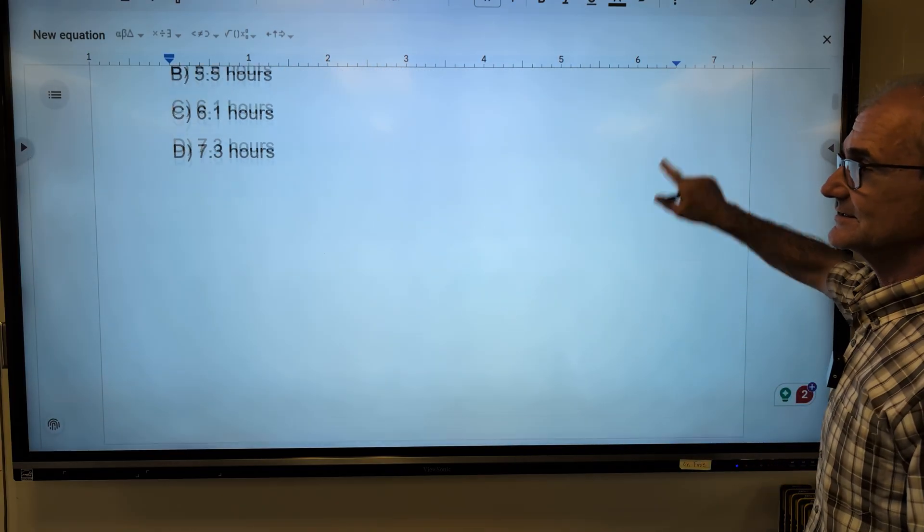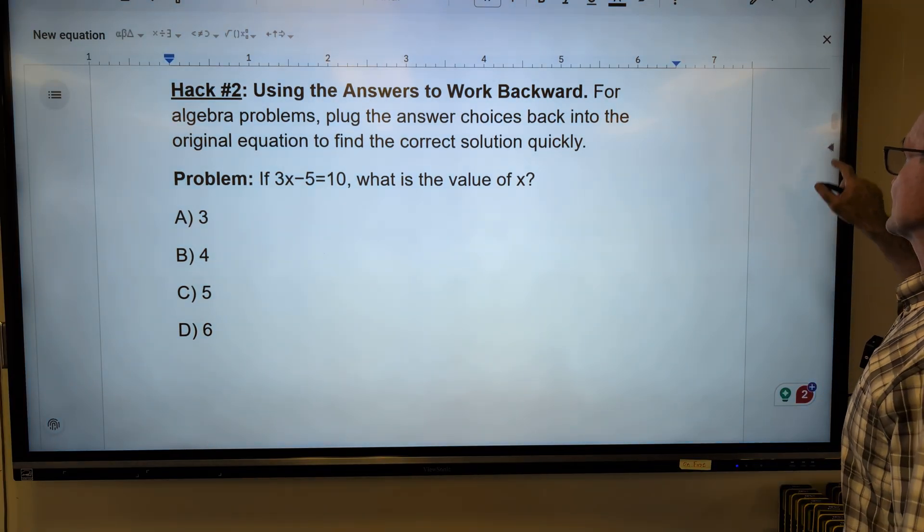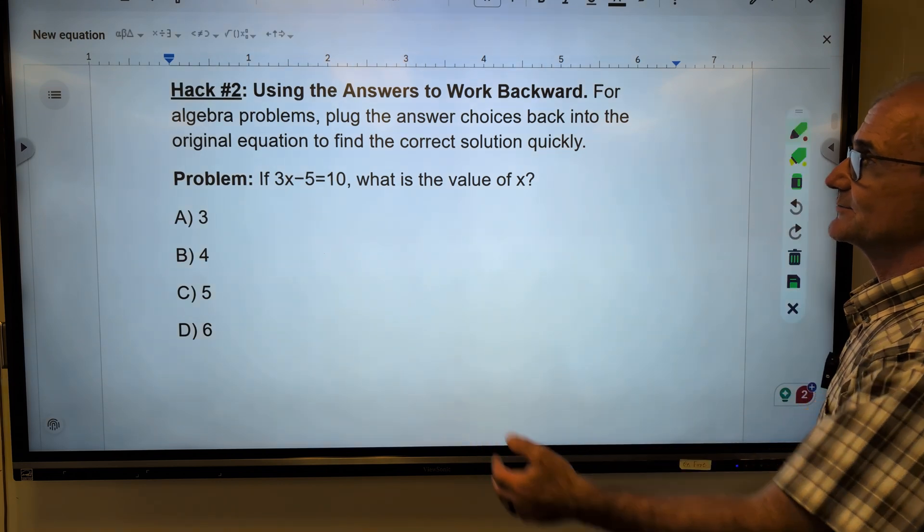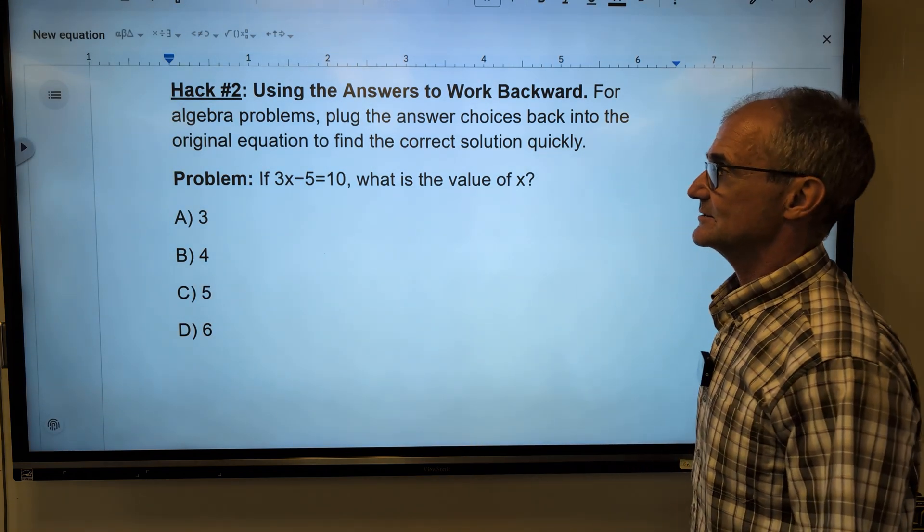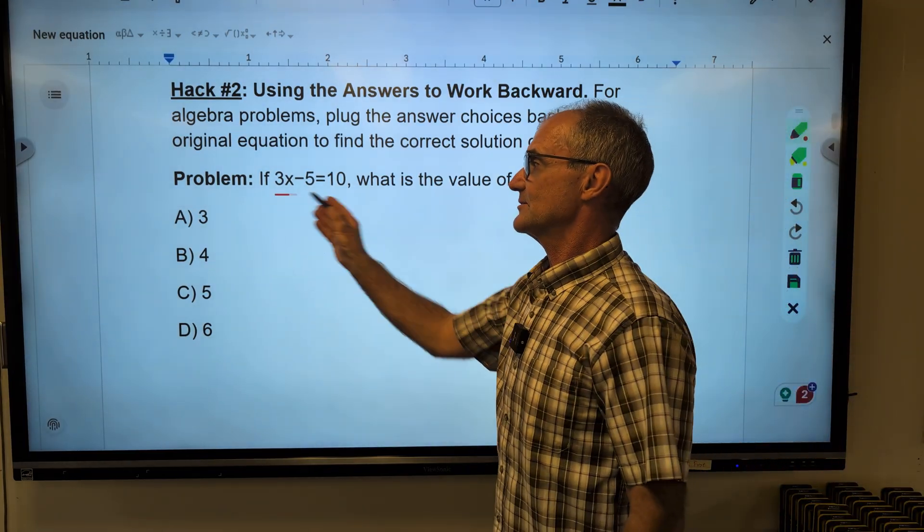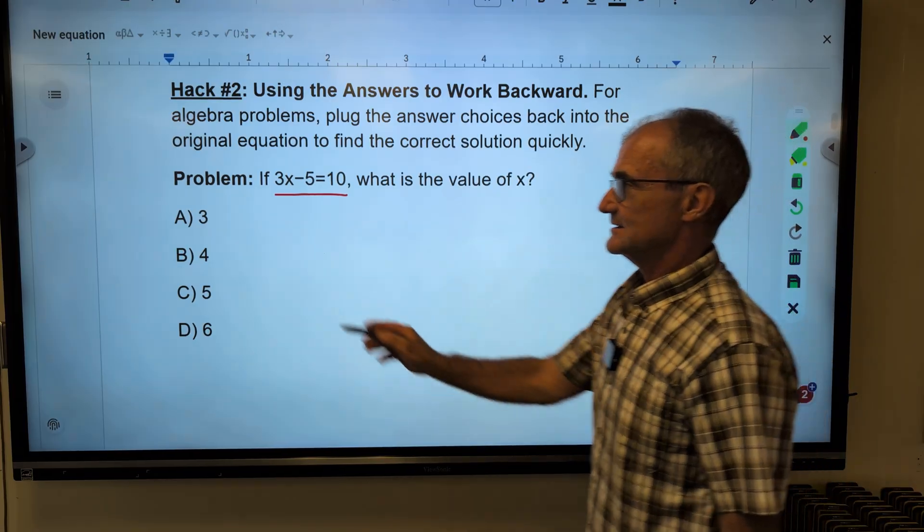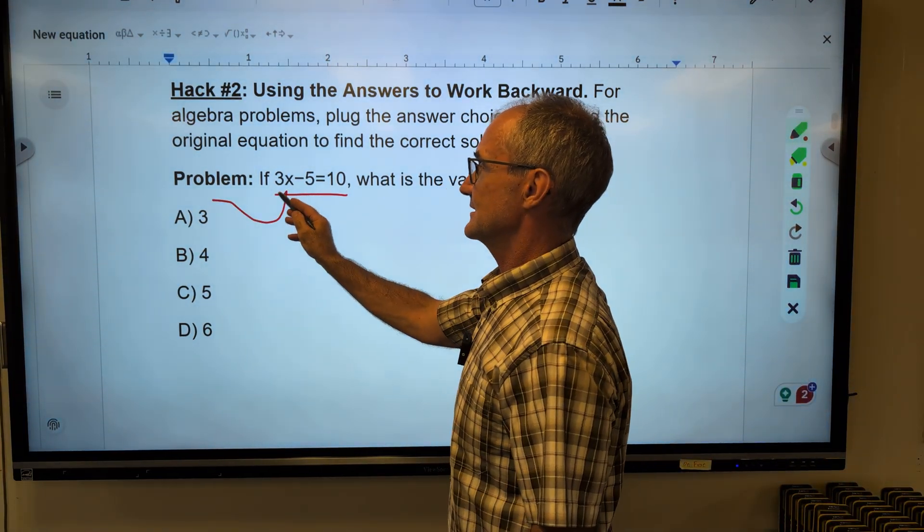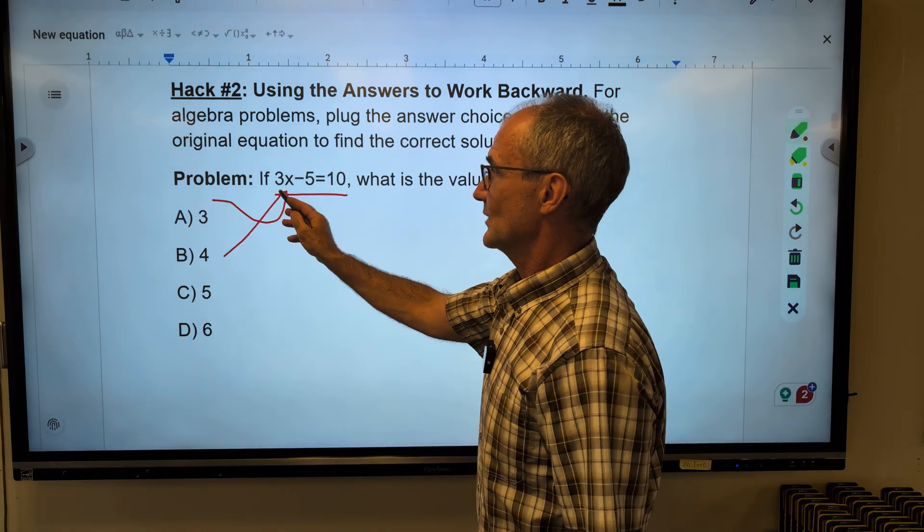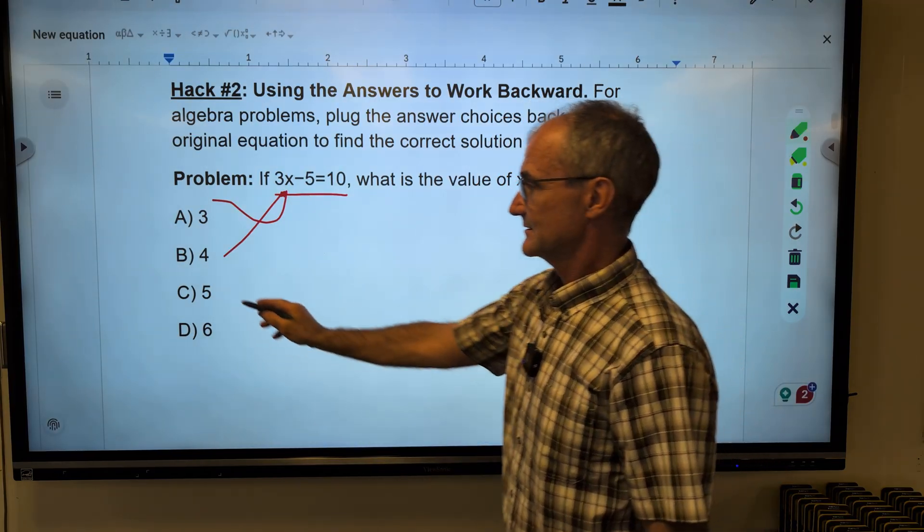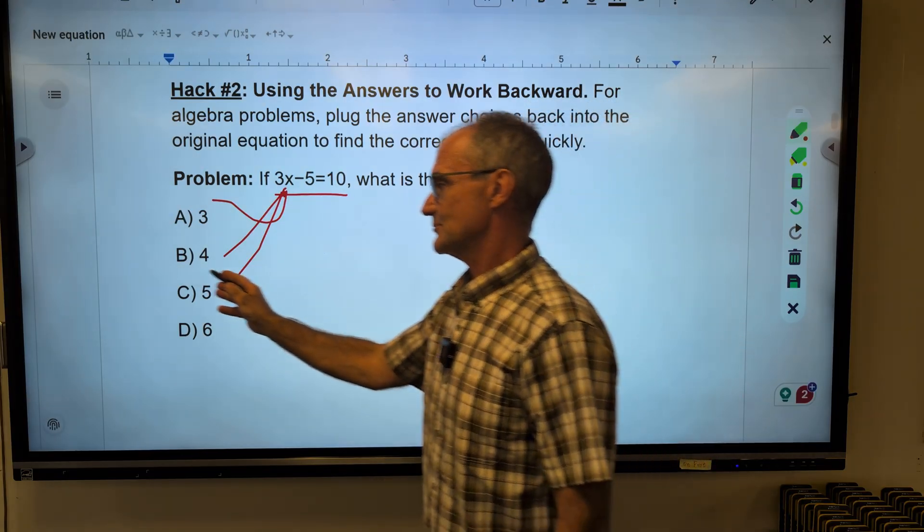All right, let's move on to hack number two. Hack number two, using the answers to work backwards. So you have these multiple-choice problems. You want to use these answers to go backwards. So hack number two is, rather than solve this whole equation, just take the value and plug it in and see if it works. Take that 3, plug it in there. 3 times 3 is 9. 9 minus 5 is not 10. 12 minus 5 is not 10. 15 minus 5 is 10. This one works.